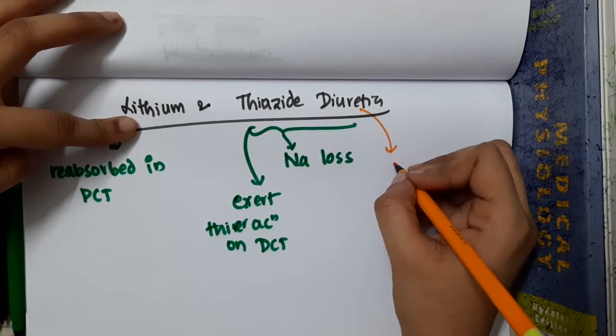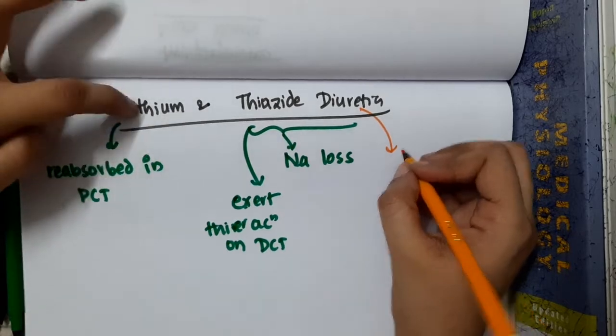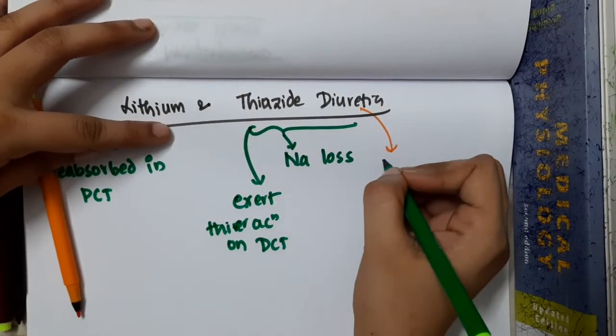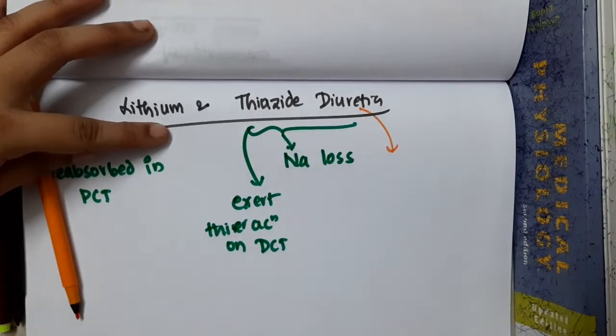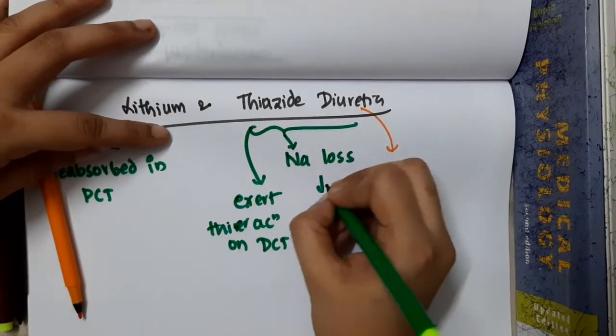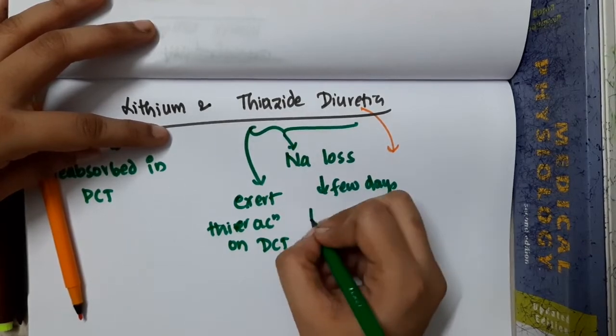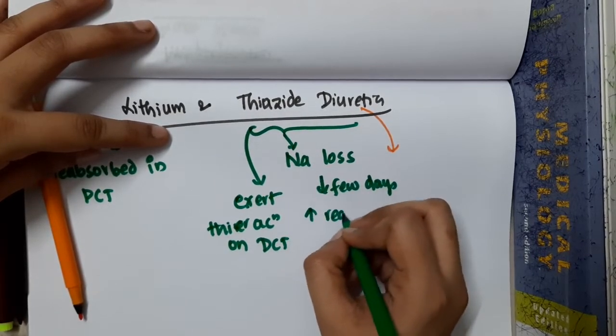Now one more thing: thiazide diuretic causes sodium loss number one. Then after few days, the body will compensate by increasing reabsorption.